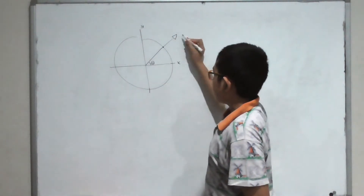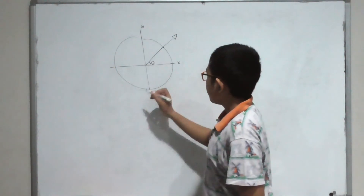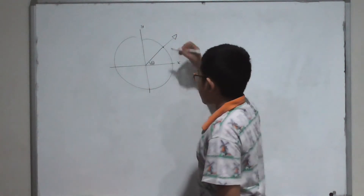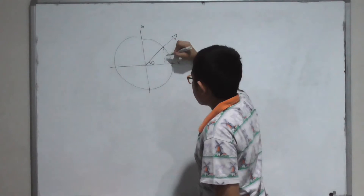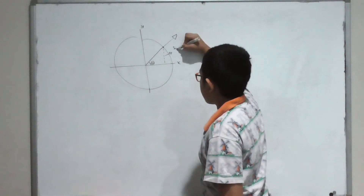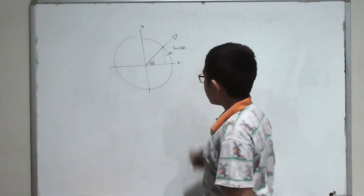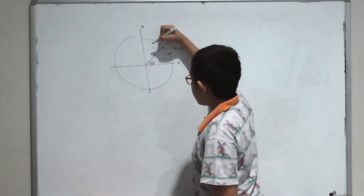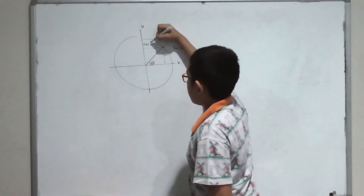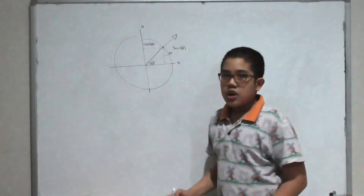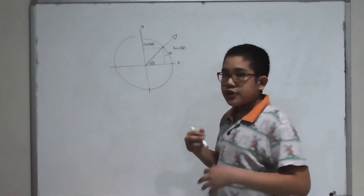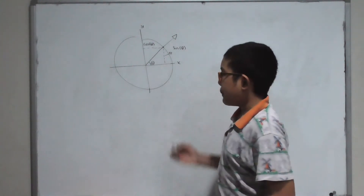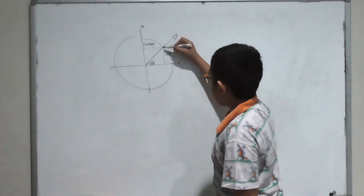Just for a quick reminder: if we take the point of intersection of the line of the angle and the unit circle, we get a point. If we measure the y value of that point, that is basically the sine of the angle, and the x value is going to be the cosine of the angle.